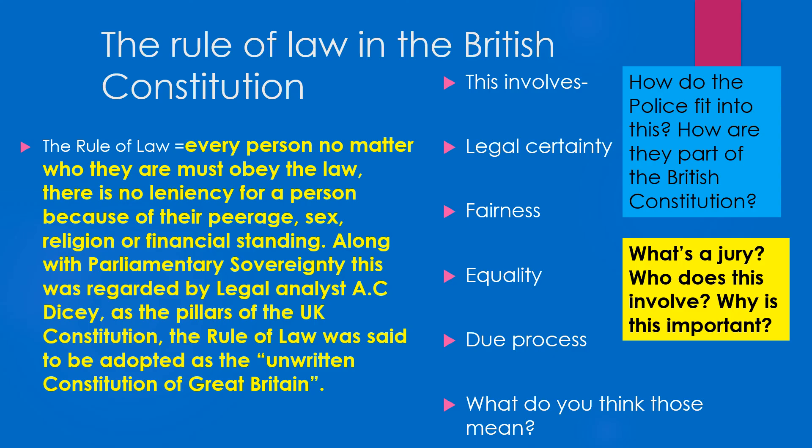How do police fit into this? How are they part of the British Constitution? Well, they're the ones who uphold the law — they're the ones who have to find you and investigate crimes if you go against the law. And what's a jury? A jury are everyday members of the public who listen to serious criminal cases in a crown court. They decide if the person is innocent or guilty. It's really important to our democracy because they're everyday people making decisions — it's not all coming from above, it's everyday people being part of our society.